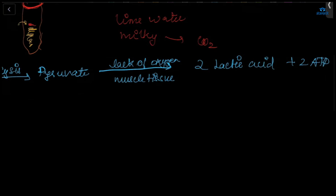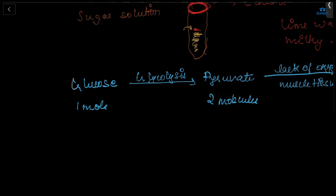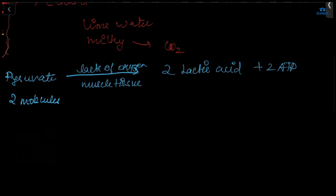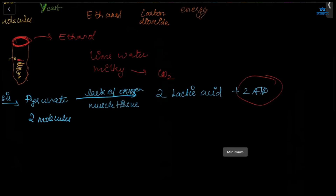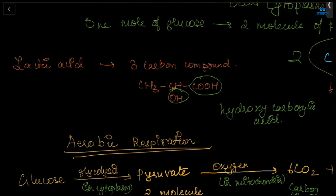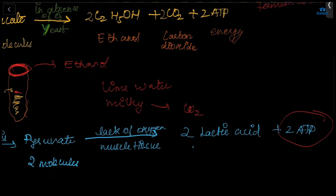From one molecule of glucose we get two molecules of pyruvate, and from that we get two molecules of lactic acid plus two molecules of ATP. The formula for lactic acid — a three-carbon compound — is CH₃–CH(OH)–COOH.